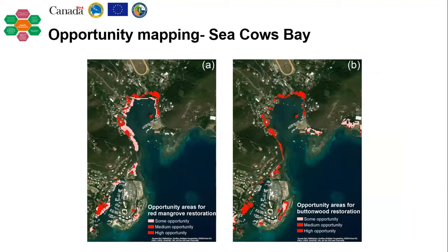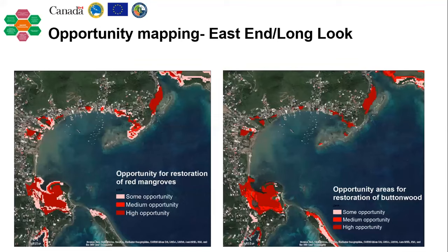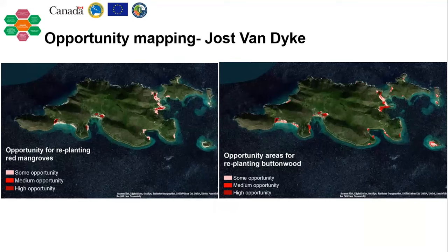We then identified areas where mangroves could be planted, restored, or protected by combining ecological data including habitat layers, pond locations, slope data, elevation, and flood risk models. Areas highlighted in orange are suitable for mangrove restoration on Tortola. Map A shows opportunity areas for red mangrove restoration — red mangroves having the highest salt tolerance and growing closest to the sea. Map B shows buttonwood restoration; though not a true mangrove, it associates with other species and has the least salt tolerance. Areas in darker red are high-opportunity, lighter pink areas are moderate opportunities.